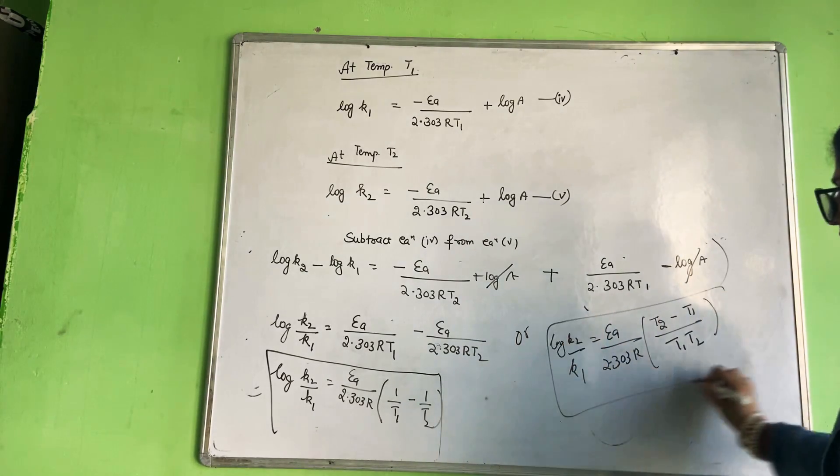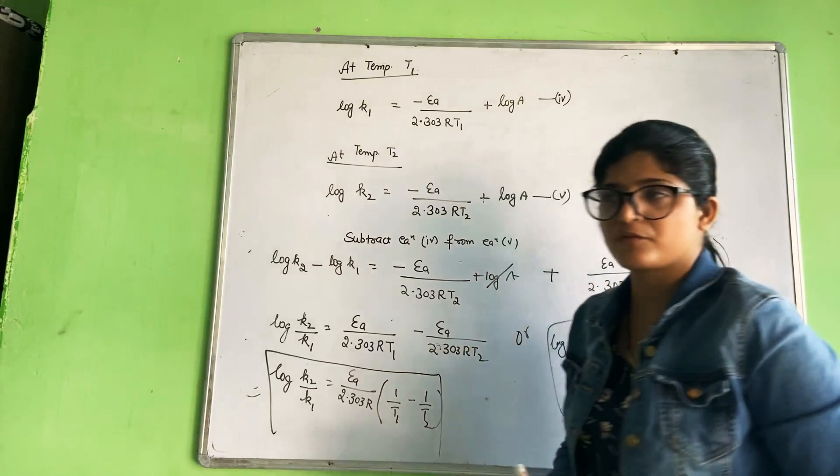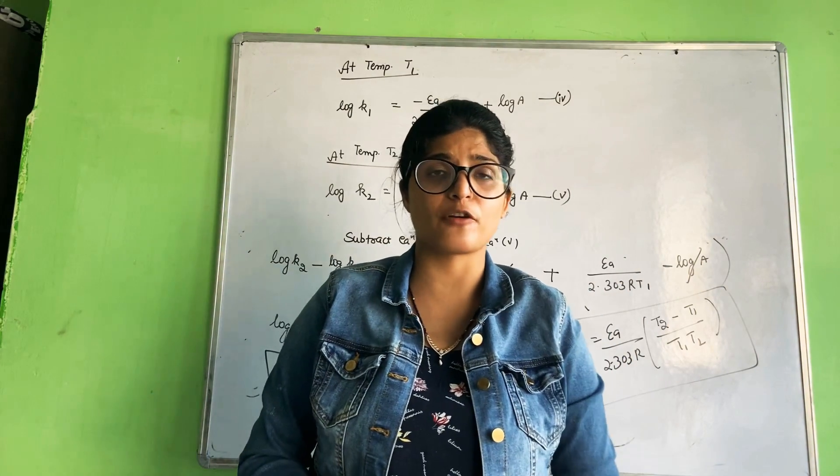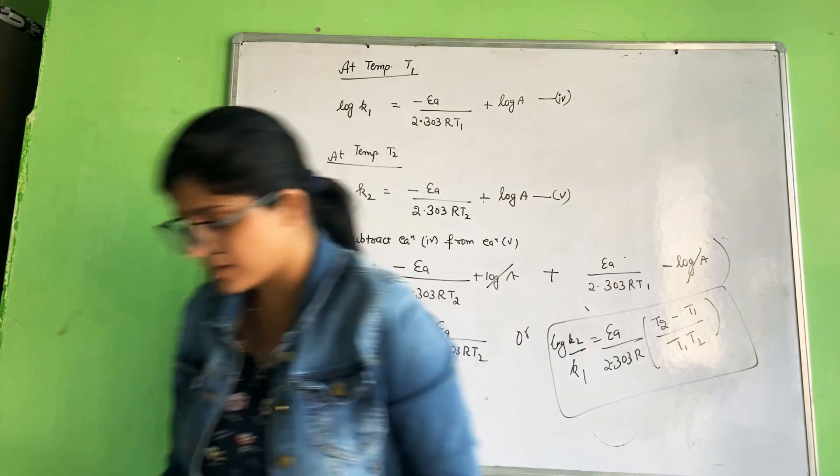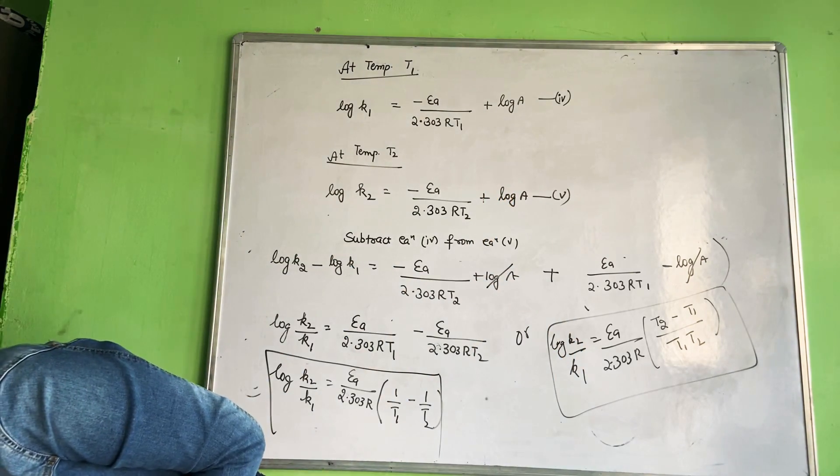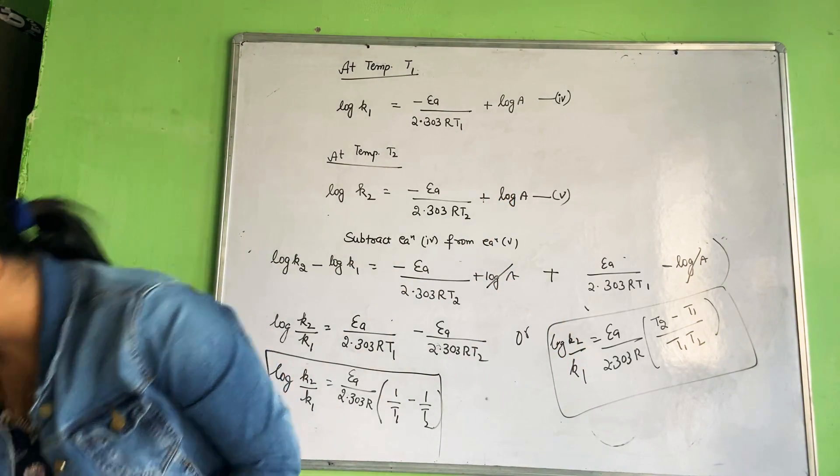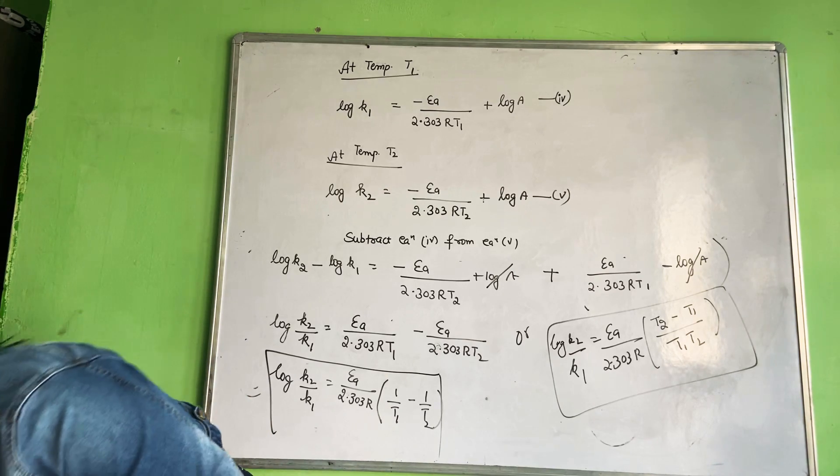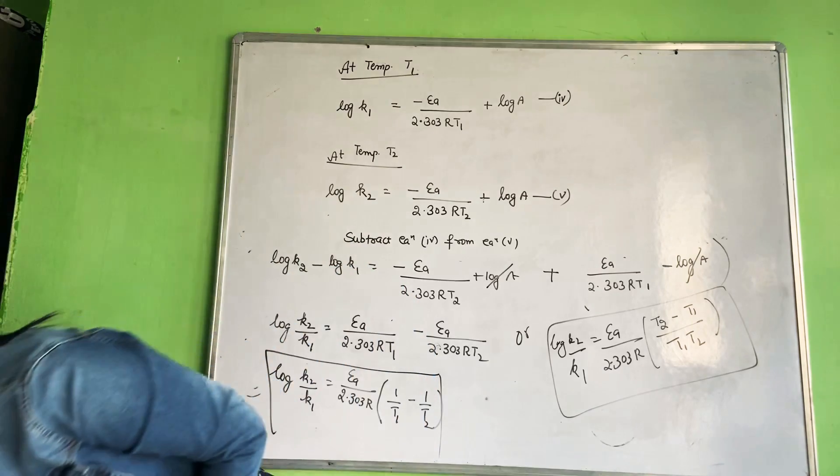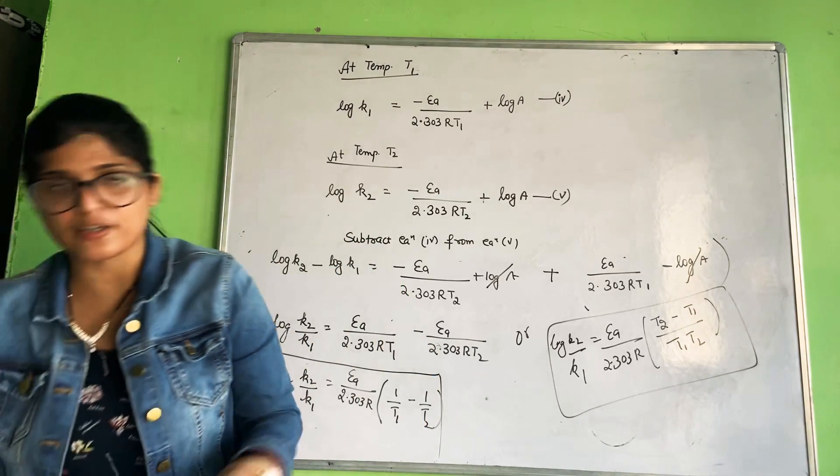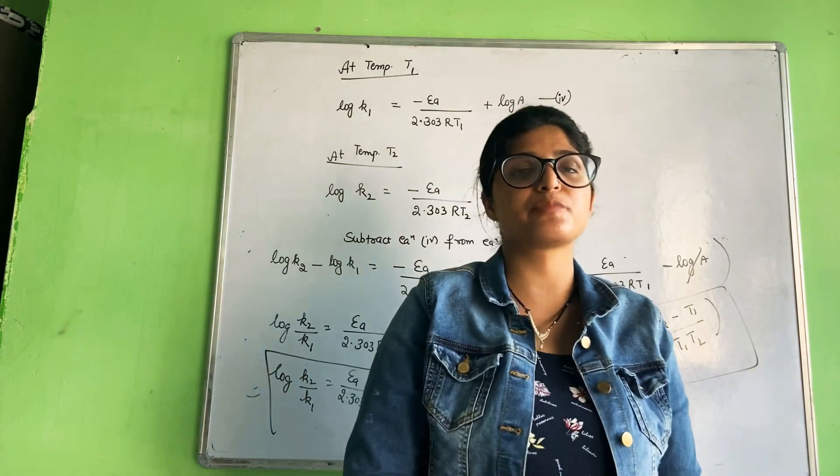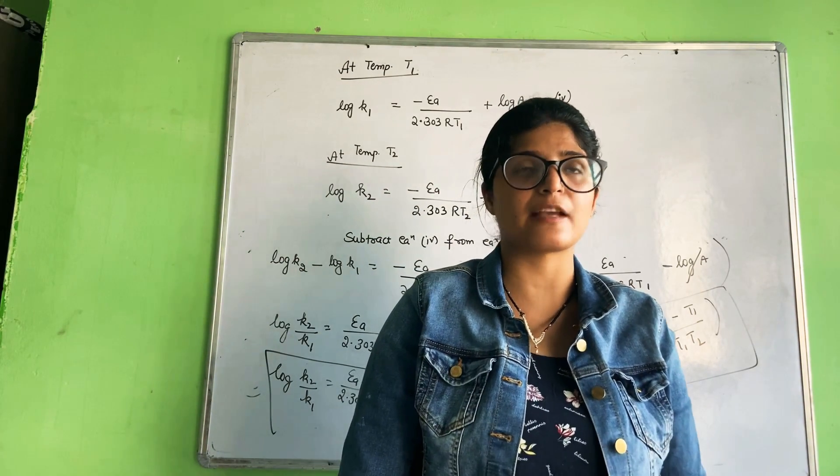This is a very important formula which you have to keep in mind. Many numericals come from this section. I hope this is clear. Arrhenius equation. In the next video we will discuss graphical representation and numericals and effect of catalyst. Till then thank you so much.